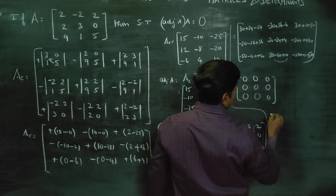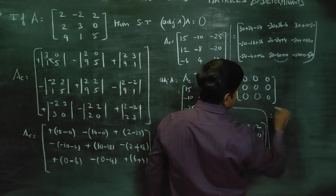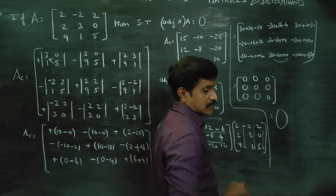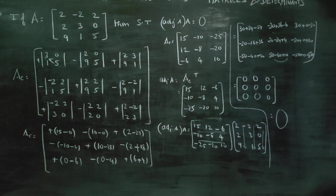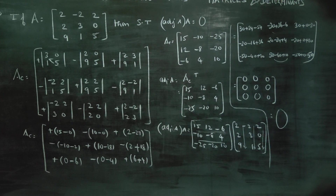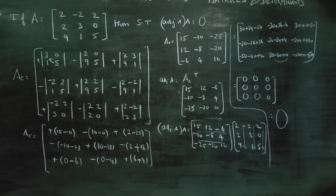All entries sum to zero: 54 minus 54 is 0, minus 96 plus 99 is 0, 90 minus 90 is 0, 60 minus 60 is 0, 50 minus 50 is 0. This is the zero matrix, and hence we have proved that adjoint A into A is equal to 0. This is your final answer. Thank you.